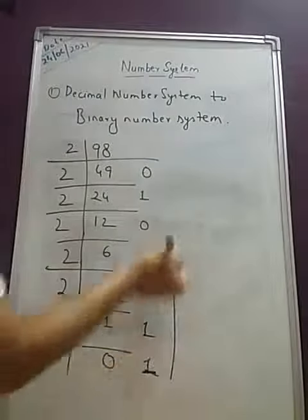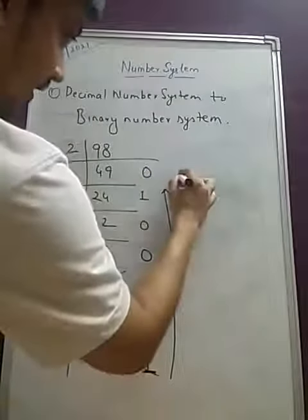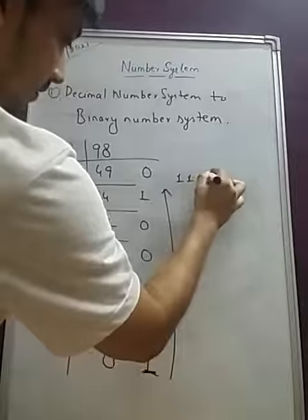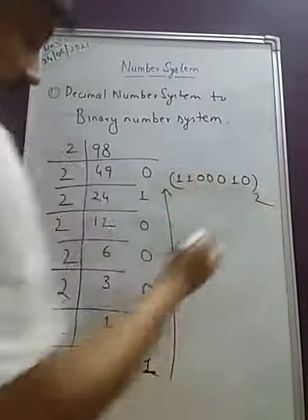So again you have to start it from this side and you will go up to over here. So what you will be writing over here? 1, 1, 0, 0, 0, 1, 0. So you are starting from here.